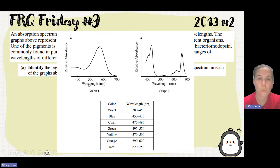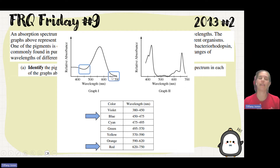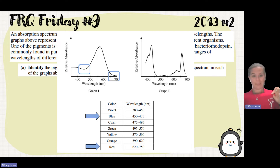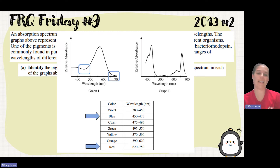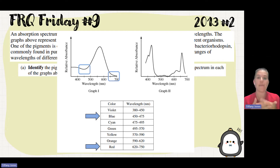If we look at graph one, we can see there's a peak showing a high amount of absorbency, and then lower ranges here. A low range tells me that the light is being reflected or transmitted. The reason my shirt is red is because red light reflects off and goes back to your eyes, while all the other wavelengths are absorbed. Since I see low absorbency in the blue and red range, and blue and red together give purple, graph one must be bacteriorhodopsin.